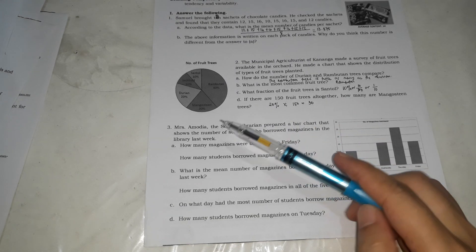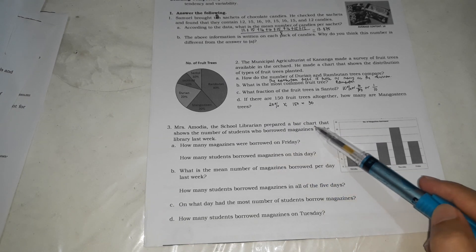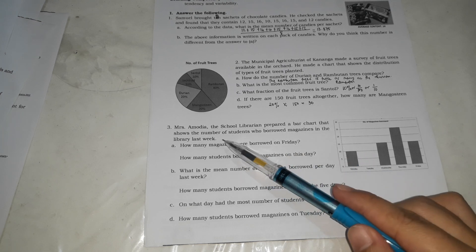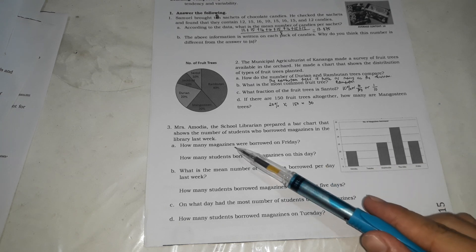Next, we're going to have this bar graph. Si Misi Samodia, the school librarian, prepared a bar chart that shows the number of students who borrowed magazines in the library last week. This is the number of students who borrowed the magazines in the library last week. Monday, it's 10. For Tuesday, wala talagang hiram. For Wednesday, it's 15. For Thursday, it's 25. For Friday, it's 15. How many magazines were borrowed on Friday? Friday, it's 15.